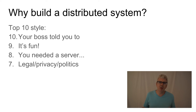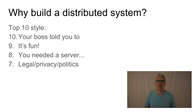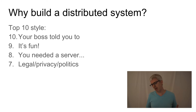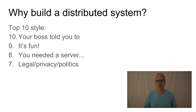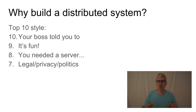Reason number seven: you might have legal, privacy, or political reasons for building a distributed system. An example is the Tor network — it's not distributed because it's more efficient to have packets bouncing between end-user machines, but because it makes it harder for someone to invade a user's privacy. Similarly, music file-sharing services like Napster were distributed primarily to preserve the legal fiction that the company providing the service wasn't violating any laws — a legal reason for designing the system that way.